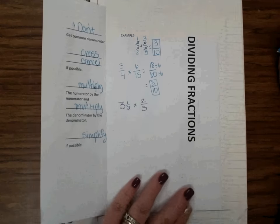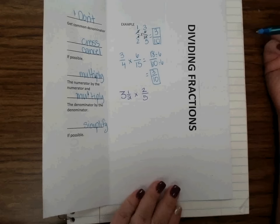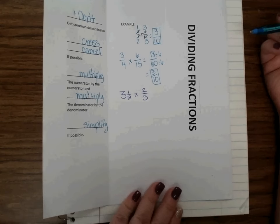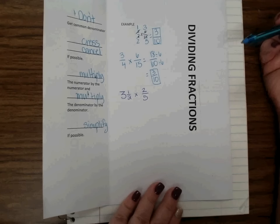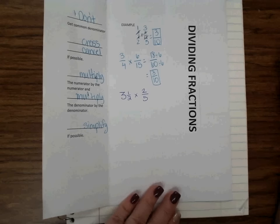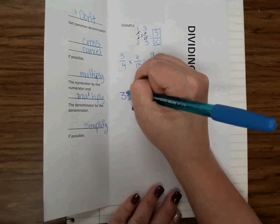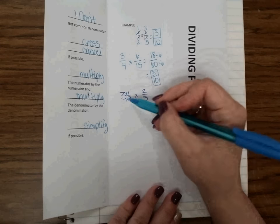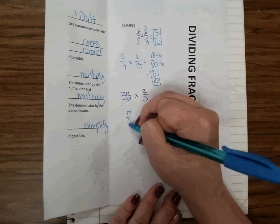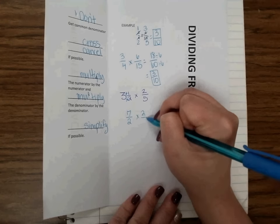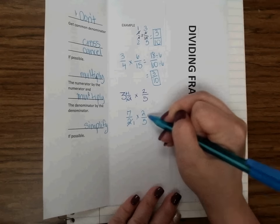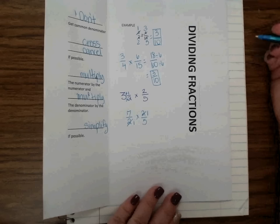I have another example. This one is 3 and 1 half times 2 fifths. So sometimes our fractions will be mixed numbers. Before I can multiply this, my mixed number needs to become an improper fraction. You have notes on this, hopefully, at the beginning of your INB. To do this, remember we have Tx. We're going to multiply and add. So 3 times 2 is 6 plus 1 is 7. So I'd rewrite that as 7 over 2. And then times 2 over 5. If I chose to cross cancel, my 2 and my 2 can both be reduced down to 1 by dividing by 2.